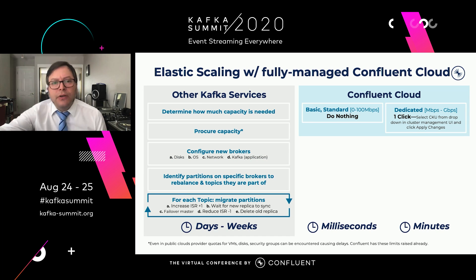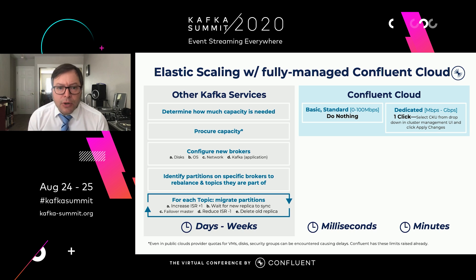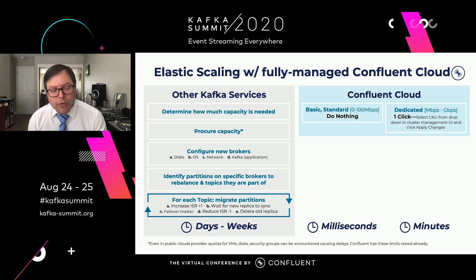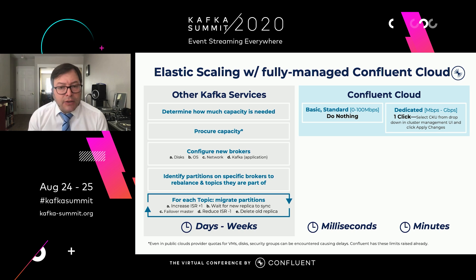When you look at what you have to do to scale Kafka in a cloud environment, on some cloud services you would really need to think about all of these steps: determining how much capacity you actually need to scale up to, procuring that capacity, configuring brokers, and then identifying which partitions on which brokers are going to move over to new brokers and replanning along the way. In Confluent Cloud, we've made this really simple. On our basic and standard tiers, designed for workloads less than 100 megabytes per second, you simply do nothing — send more data and the service scales automatically for you, and scales back down when you're done. Nothing to do on your side; it happens instantly.